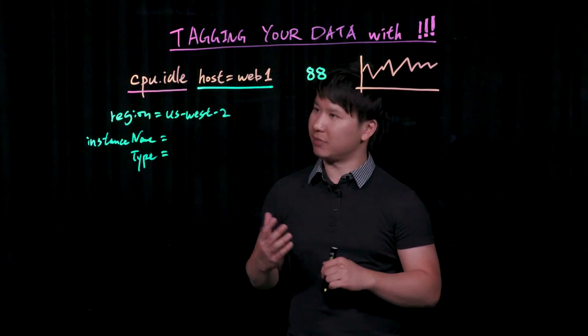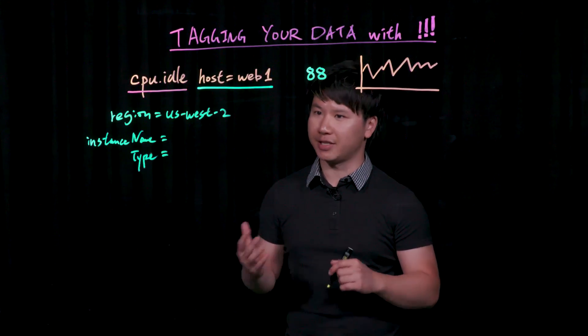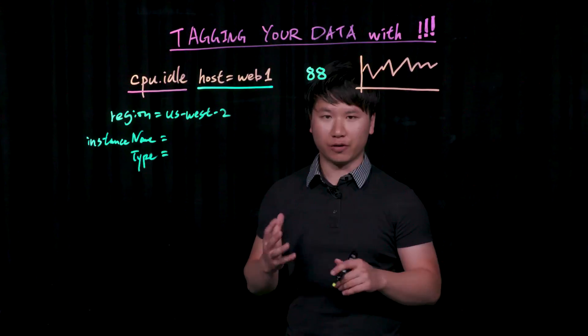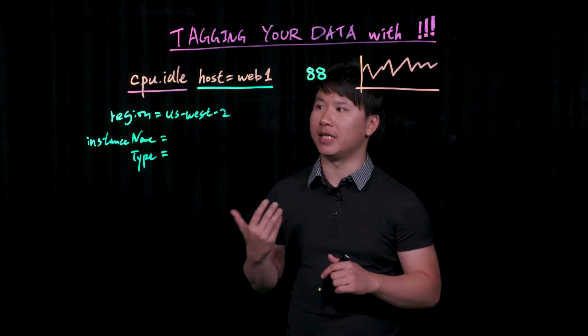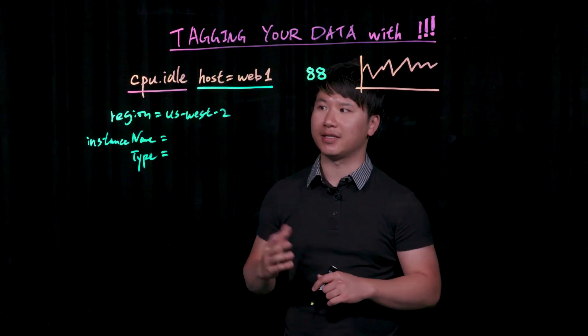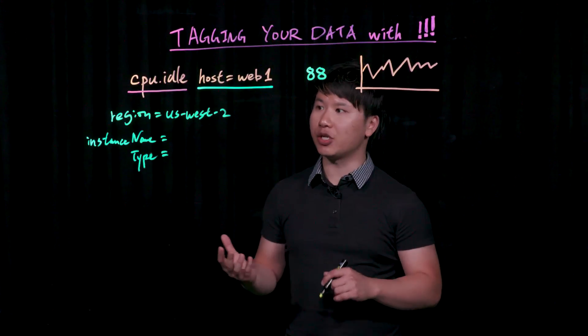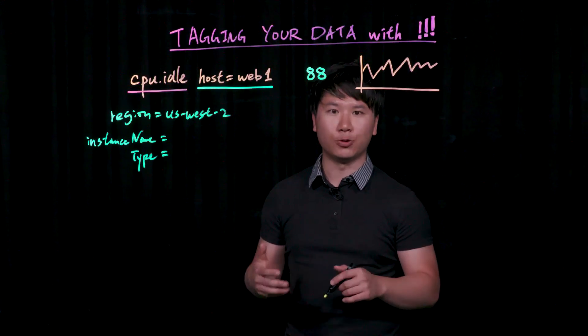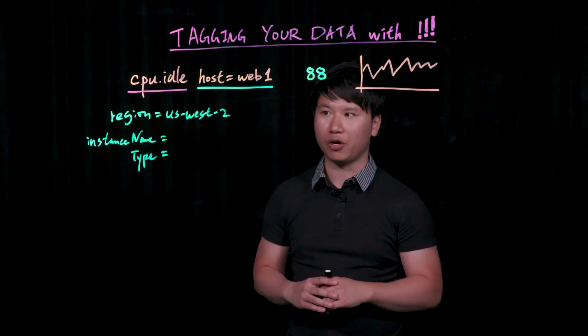For example, if you're using Telegraph to collect data from, let's say, your Redis cluster, you could configure Telegraph so that it automatically injects additional tags as the data is collected. Many of such integrations automatically include such dimensions that are relevant to the integration itself.